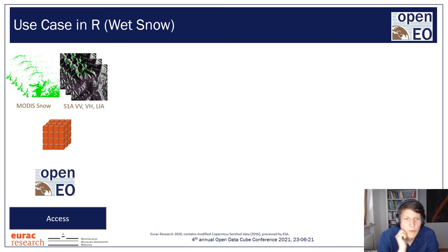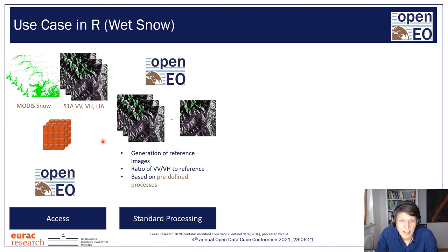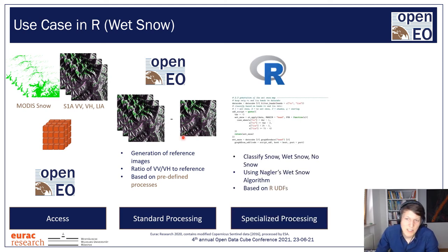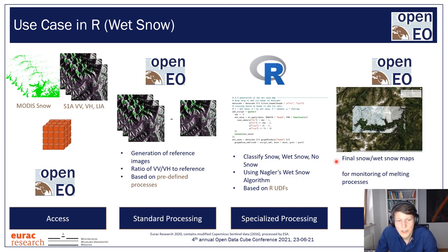So how can OpenEO be used in a real-world application? For example, the mapping of wet snow using SAR data. In this example, we access two existing datasets: a time series of Sentinel-1 data, and existing snow maps derived from MODIS through OpenEO that are in our data cube. Then we apply standard formulas to prepare our data — for example generation of reference images, and subtracting them to normalize the images. We then pipe in more specific code as a UDF, defined in R in this example. Finally, we process all of this and get results as a time series of wet snow maps in one of the valleys here in South Tyrol.